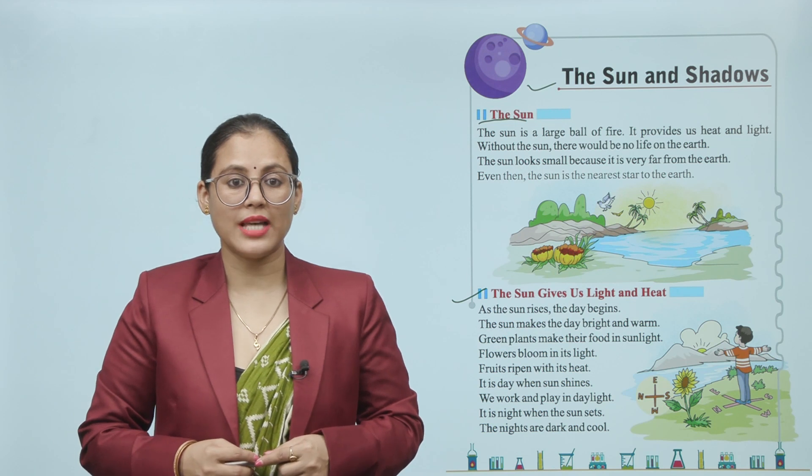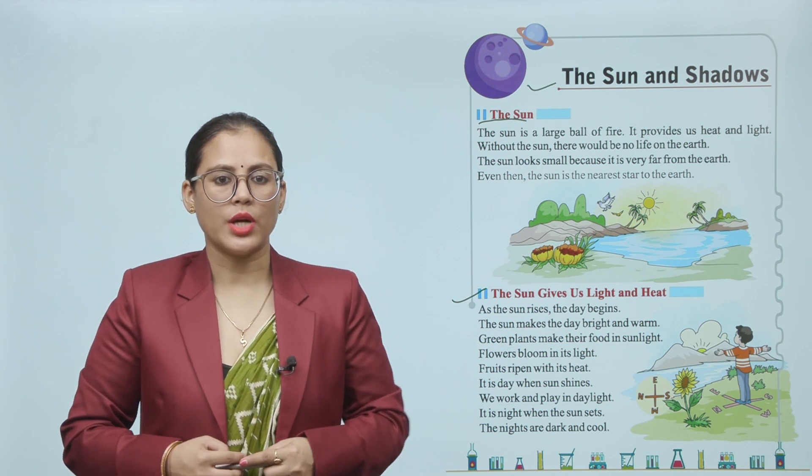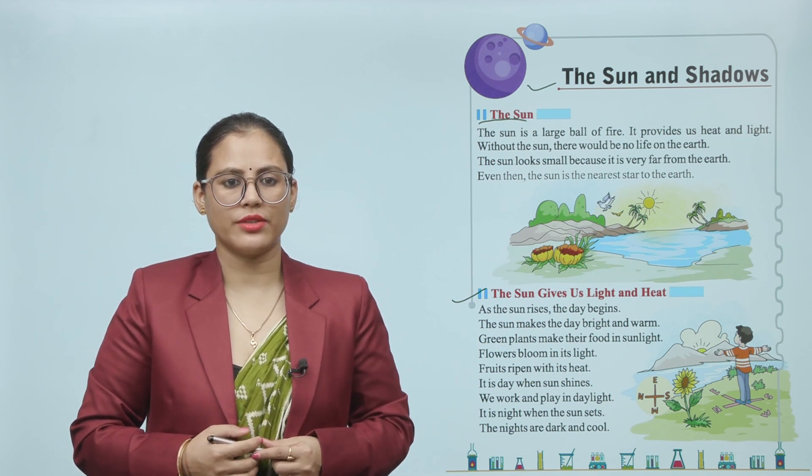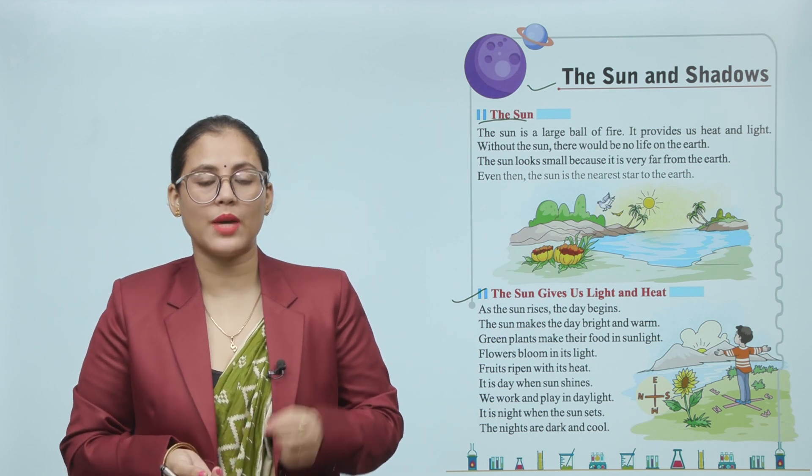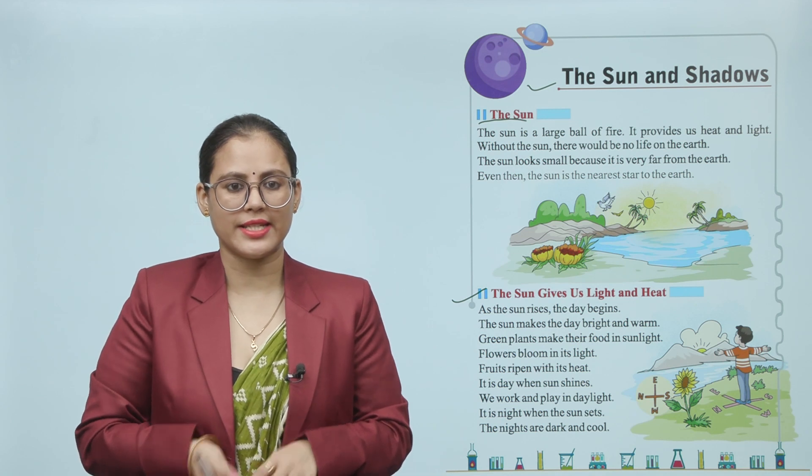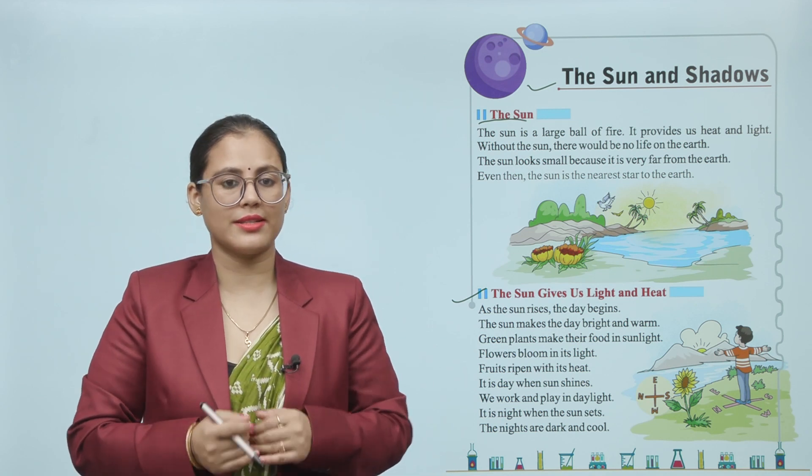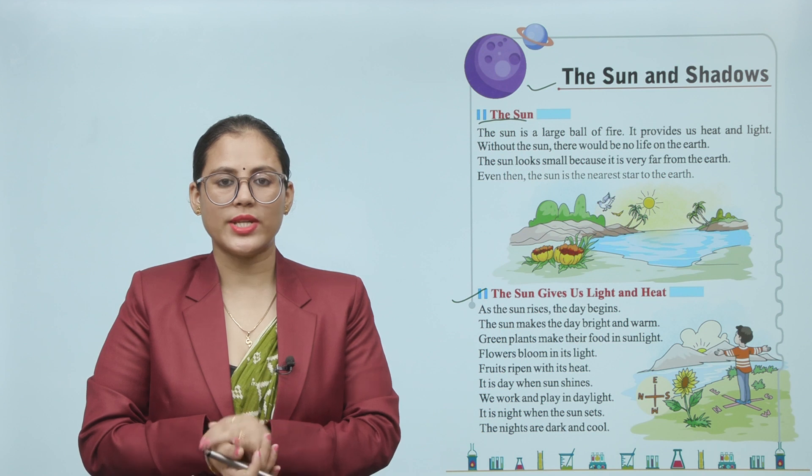The Sun gives us light and heat. As the sun rises, the day begins. The Sun makes a day bright and warm. Green plants make their food in sunlight. Flowers bloom in its light. Fruits ripen with its heat. It is day when Sun shines. We work and play in daylight.